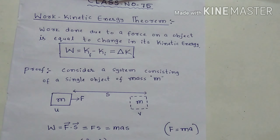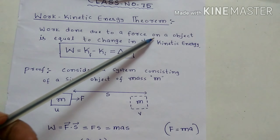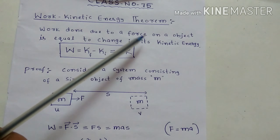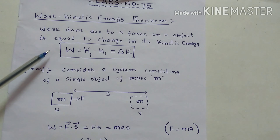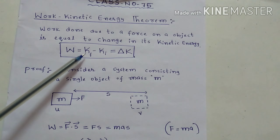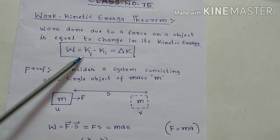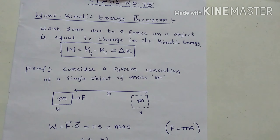This is class number 75 — work-kinetic energy theorem. Work done due to a force on an object is equal to the change in its kinetic energy. So work done W equals final kinetic energy minus initial kinetic energy: W = Kf − Ki = ΔK. We will prove this.